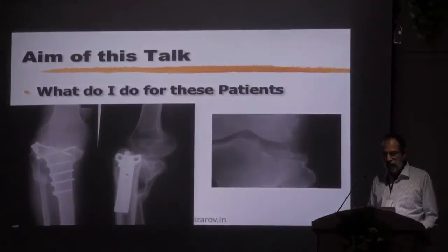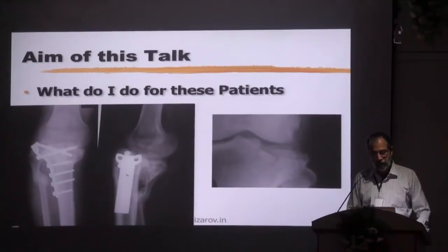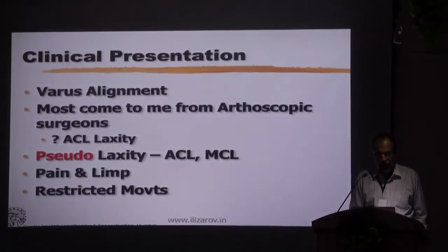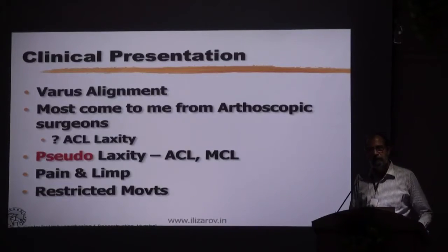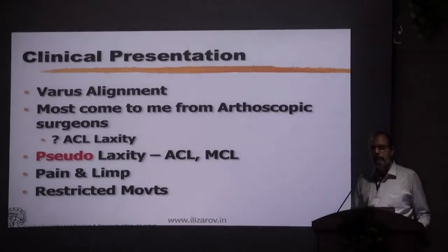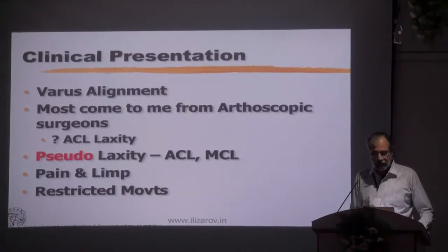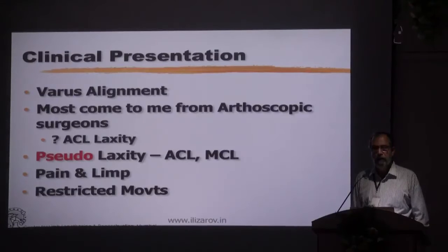Most of these patients who come with especially varus malunion of the proximal tibia come with a varus alignment. Most of them that I get now have been from arthroscopic surgeons and sports medicine surgeons, where these patients have been sent for an ACL laxity. But this is a pseudo-ACL laxity because the medial side has collapsed. Often they have pain, limp, and sometimes restricted movements.